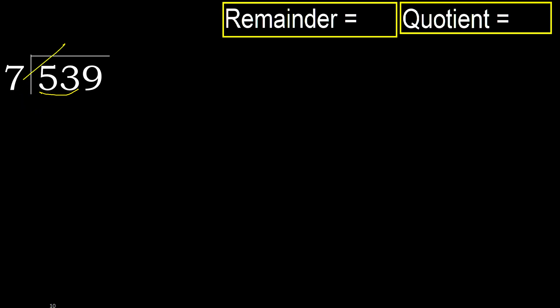7 multiplied by which number is nearest to 53 but not greater? 7 multiplied by 8 is 56, which is greater. 7 multiplied by 7 is 49, which is not greater. Subtract: 53 minus 49 is 4.